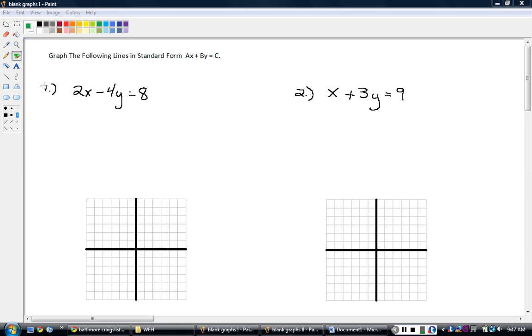My example number one is 2X minus 4Y equals 8. That's a line we're going to have to graph. We're going to work with really two forms in this class: standard form and slope-intercept form. Let me just show you slope-intercept form, the next chapter, because you're probably familiar with it.